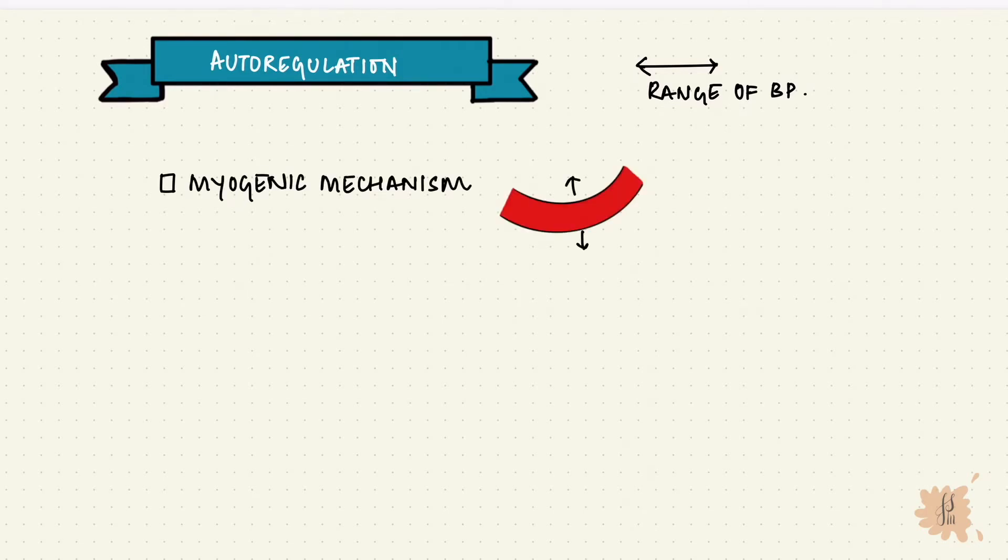The renal blood flow and the GFR are autoregulated over a wide range of pressure changes from 75 to 180 mmHg. Pressure changes in this range alter the GFR in very minute amounts. The RBF is regulated by two mechanisms: the myogenic mechanism, where the blood vessel resists stretching in increased pressure to maintain constant renal blood flow, and the tubuloglomerular feedback.